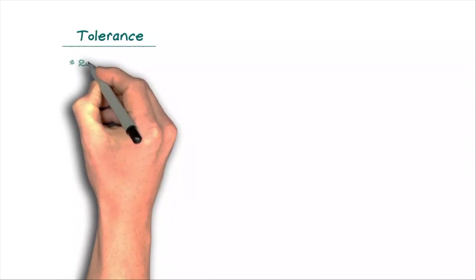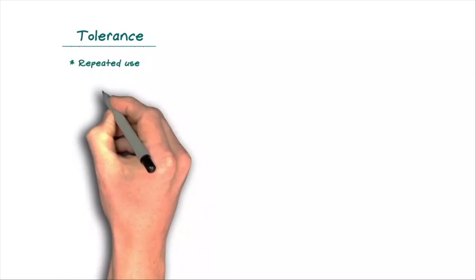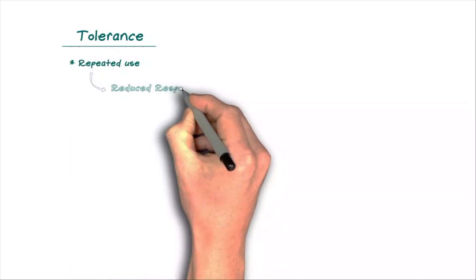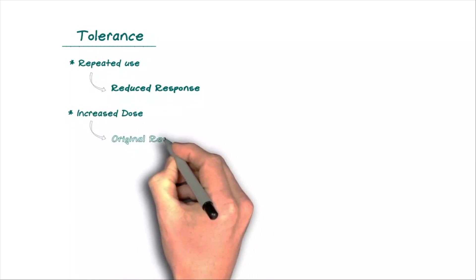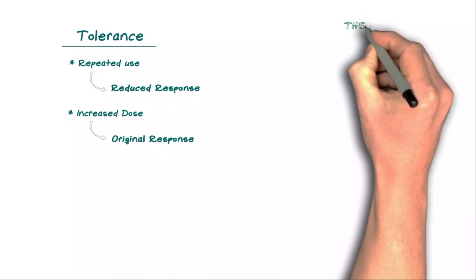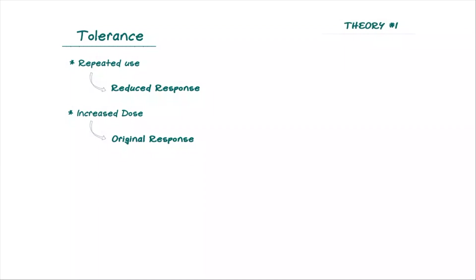Now, over time, people that are consistently using a drug, even when taking them exactly as prescribed, can develop tolerance, which means that with repeated use, they have a reduced response. And therefore, an increased dose is needed to achieve the original response. At a cellular level, there are two theories that explain why this might happen.